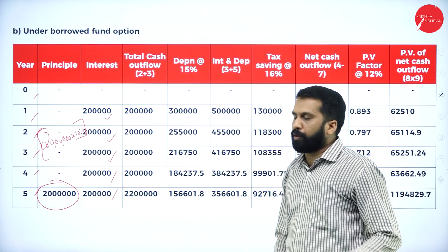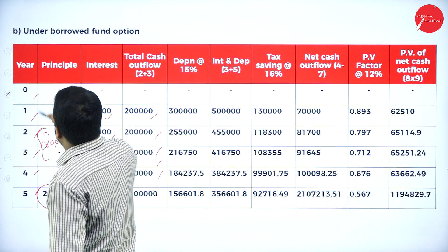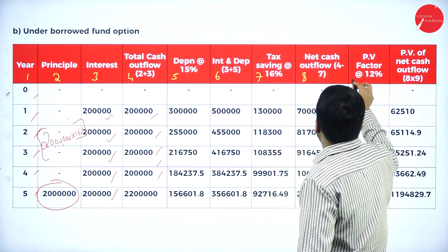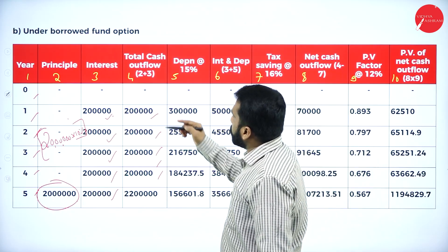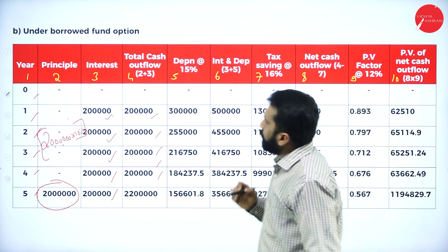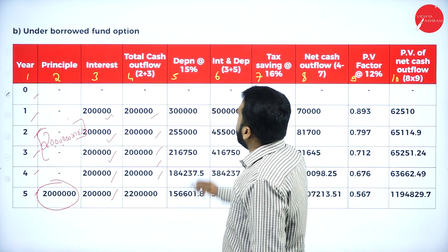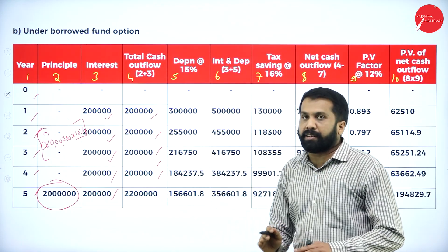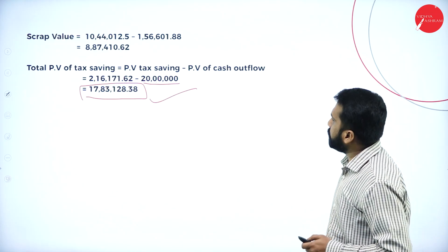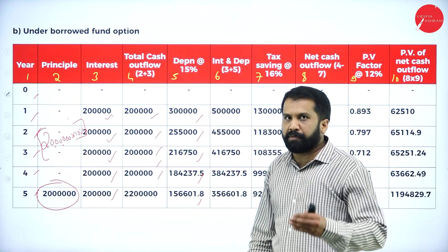What is your total cash outflow? These are your total cash outflows. The columns are numbered 1 through 10. Column number 2 plus 3 gives this answer. What is the depreciation? Already calculated — don't calculate again. Go back to own fund, copy and paste: 3 lakh, 2 lakh 55, 2 lakh 16, 1 lakh 84, 1 lakh 56. Same thing copied and pasted.